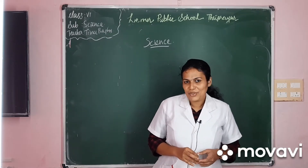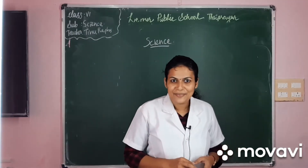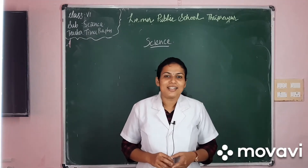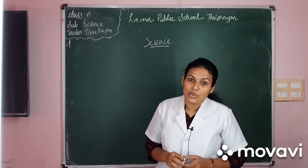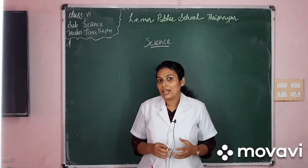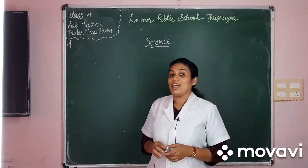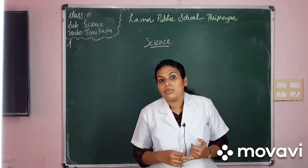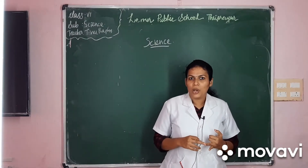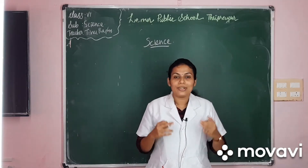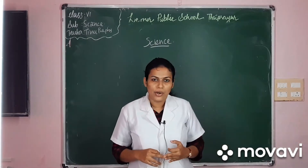Hello my dear children, welcome to your science class. Last class we learned about the joints. We learned three types of joints: immovable joints, slightly movable joints, and freely movable joints.